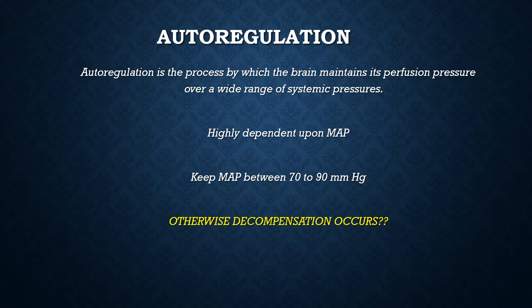So ideally we want to keep the MAP between 70 and 90. If our MAP is below 70, oftentimes the brain can't autoregulate enough to perfuse the brain adequately, and we'll start to see signs of cerebral ischemia — remember, ischemia is poor perfusion. If the MAP is over 150, the brain cannot accommodate for this severely high pressure, and the vessels can't constrict anymore to compensate, so the intracranial pressure will increase.